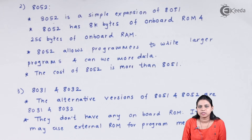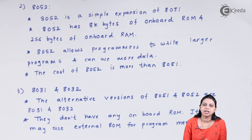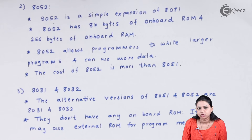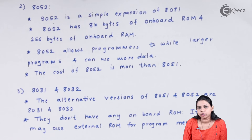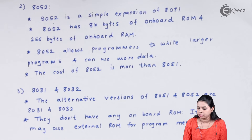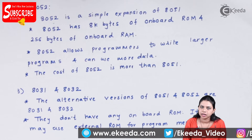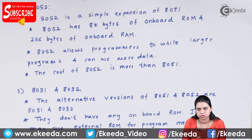This question is also important from an exam point of view — it may ask you to state any three expanded features of 8052 over 8051. In that case, explain these three points: first, 8052 has 8 kilobytes of onboard ROM and 256 bytes of onboard RAM, compared to 4 kilobytes of ROM and 128 bytes of RAM in 8051. Second, you can write a larger program in 8052. Third, the cost of 8052 is more than 8051.